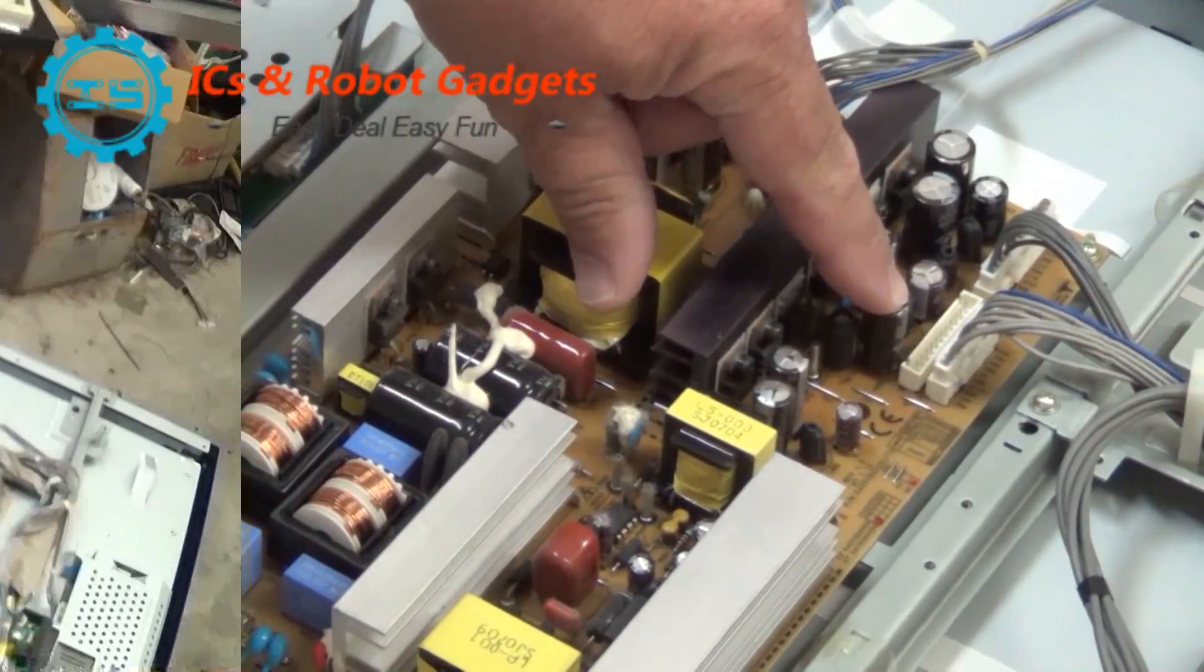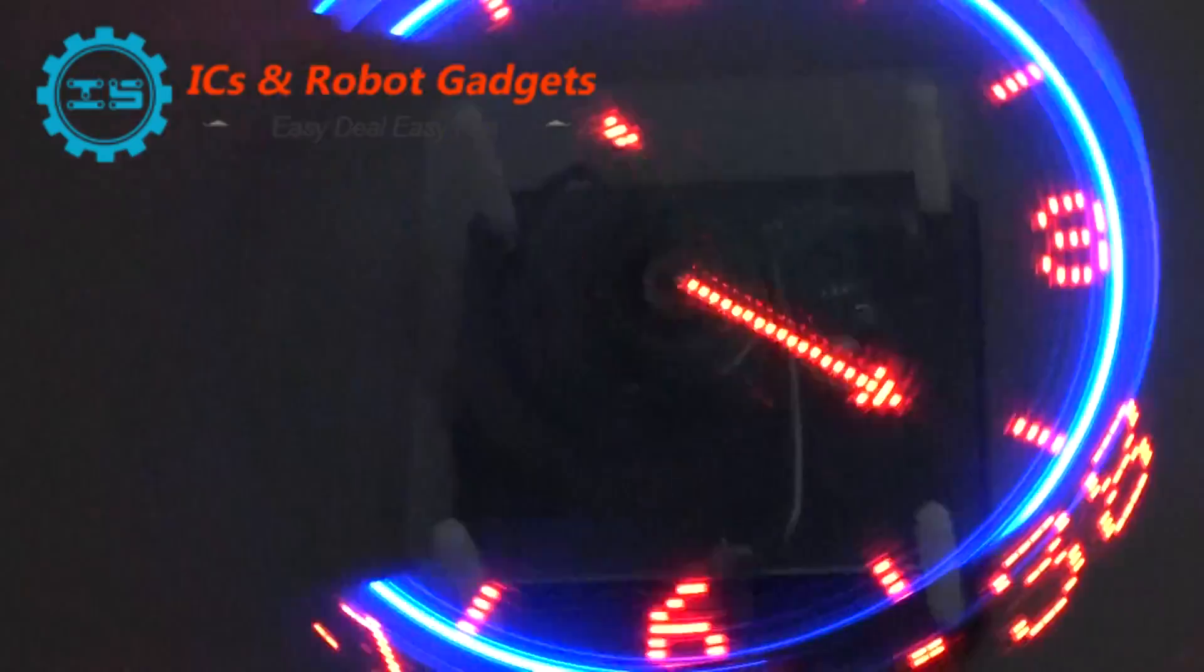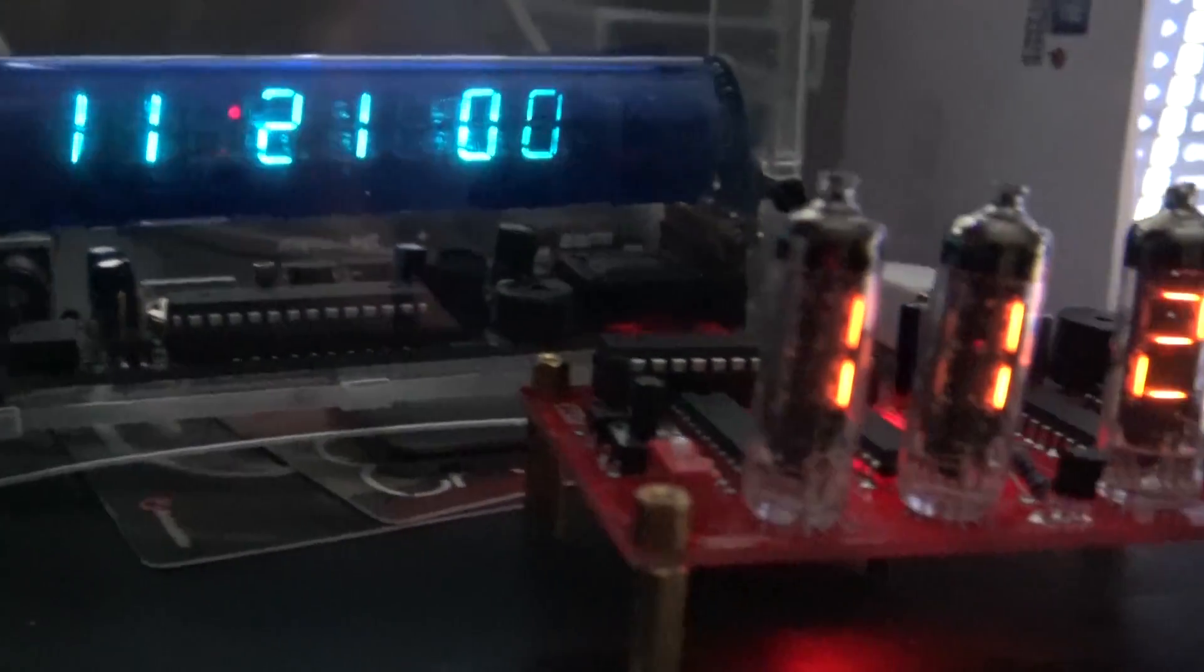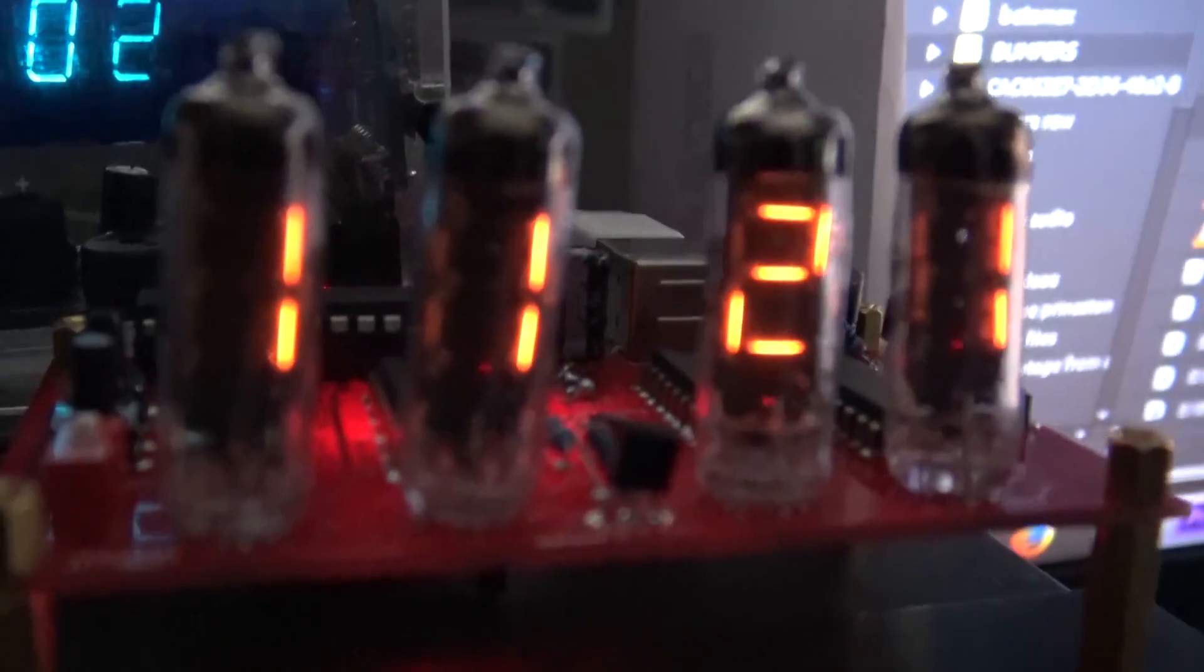The folks over at IC Station have sent me a DC to DC buck power converter. This is a step down DC to DC converter. It will step down voltages to whatever you preset and also limit current.